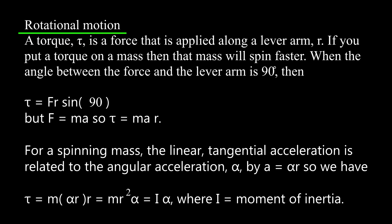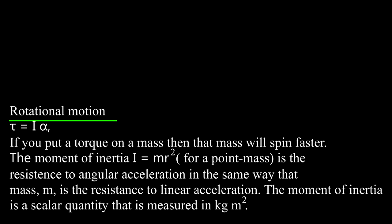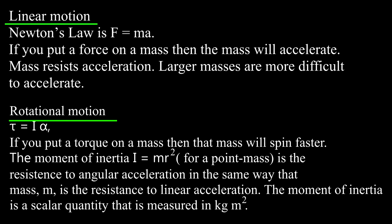For a spinning mass, the linear tangential acceleration is related to the angular acceleration alpha by a equals alpha r. So we have torque equals m times alpha r times r, which is mr squared alpha, and we define this to be I times alpha, where I is the moment of inertia of the spinning object. In rotational motion, torque equals I alpha, analogous to the linear case F equals ma.